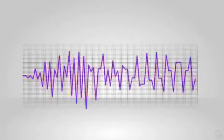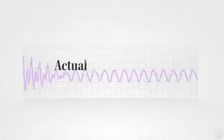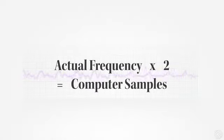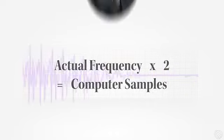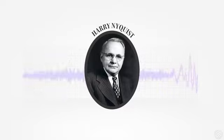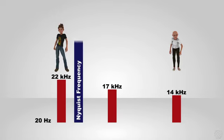In digital audio, the number of times per second the computer samples the audio signal should be twice the highest frequency that needs to be represented. This is called the Nyquist rate after an electronic engineer called Harry Nyquist. So, if we want to make sure our teenage population can hear a reproduction of sound right up to 22 kilohertz, we need to make sure our computer samples the sound at a rate at least double that, which is 44 kilohertz. Does that sound familiar? That's the frequency at which CDs sample audio.